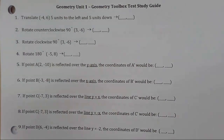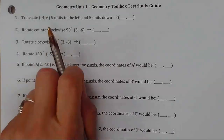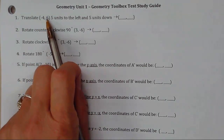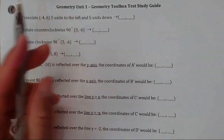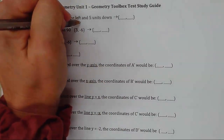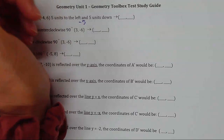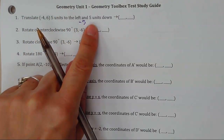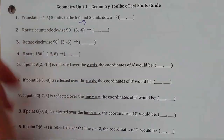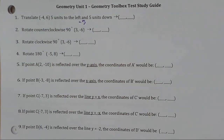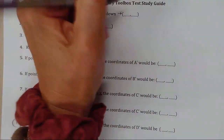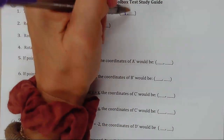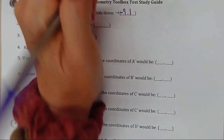All right, here we go with our first video for the year. Translate negative 4, 6 to the left 5 and down 5 units. So if we do negative 4 minus 5, we're going to end up with negative 9, and positive 6 minus 5 gives us positive 1.